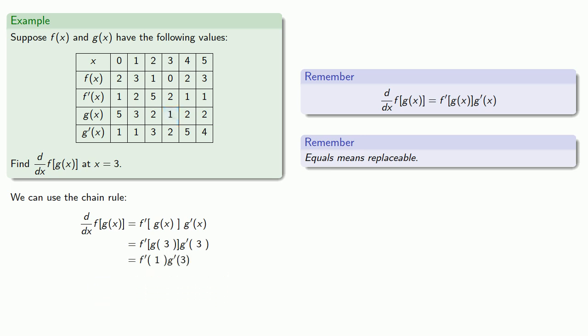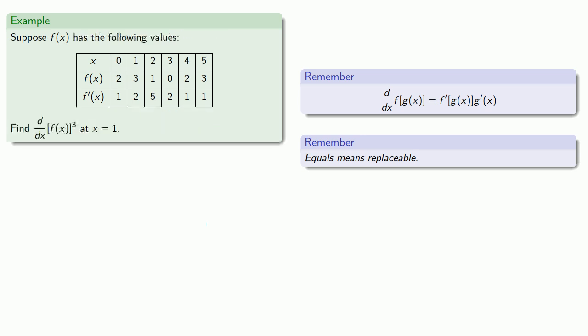If only there was some way we could determine the value of f prime of 1 and g prime of 3. f prime of 1 is equal to 2 and g prime of 3 is also equal to 2. And we can apply this approach to any problem that involves the chain rule.